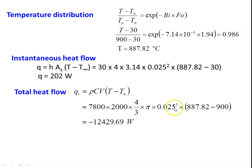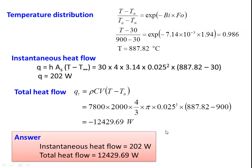For the total heat flow, the equation from the data book is: Q_t equals rho·C·V into (T − T₀). Rho equals 7800, C equals 2000, volume of the sphere equals (4/3)π·R³. Substituting: 4π × (0.025)³ into (887.82 − 900) equals −12,429.69 watts. All equations are available in the data book; refer to the corresponding page. The answer: instantaneous heat flow is 202 watts and total heat flow is 12,429.69 watts. At the end of every problem, present the answer clearly — it will give additional credit to your answer.